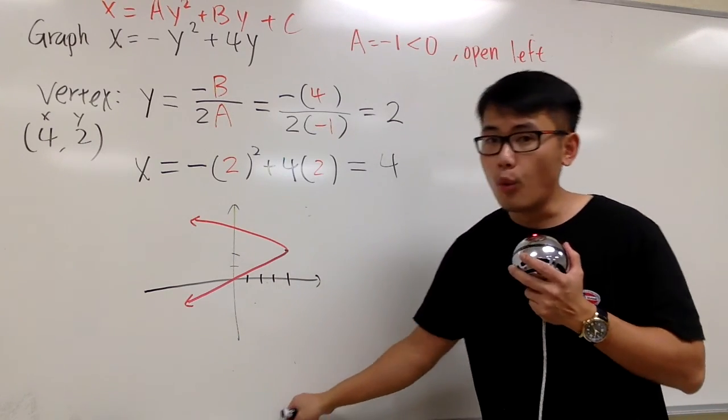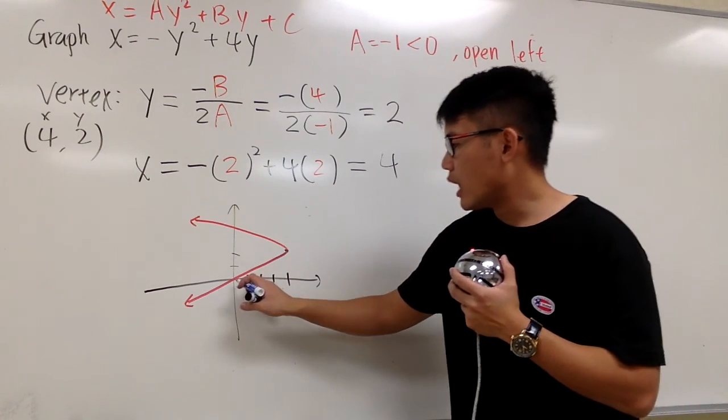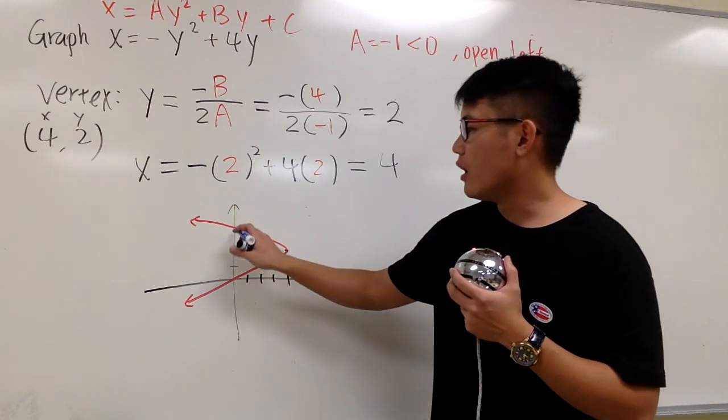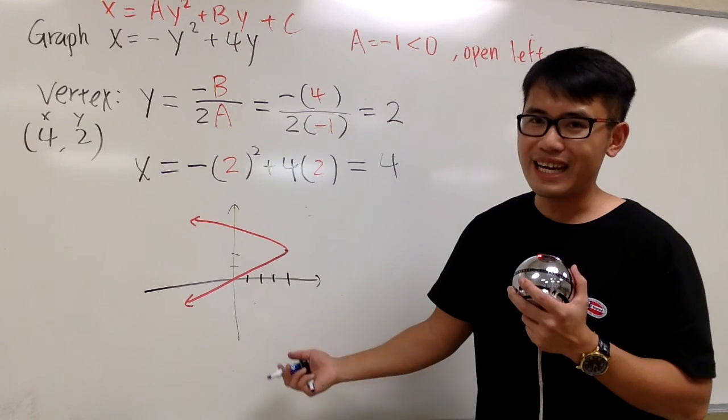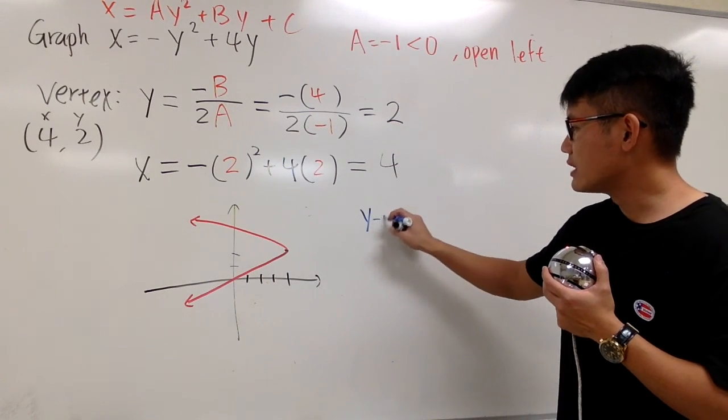However, if you want to have more information on the graph, for example, how do I know the parabola will cross here and here? And what exactly are these two points? Here is the y-intercept. So here is the y-intercept.